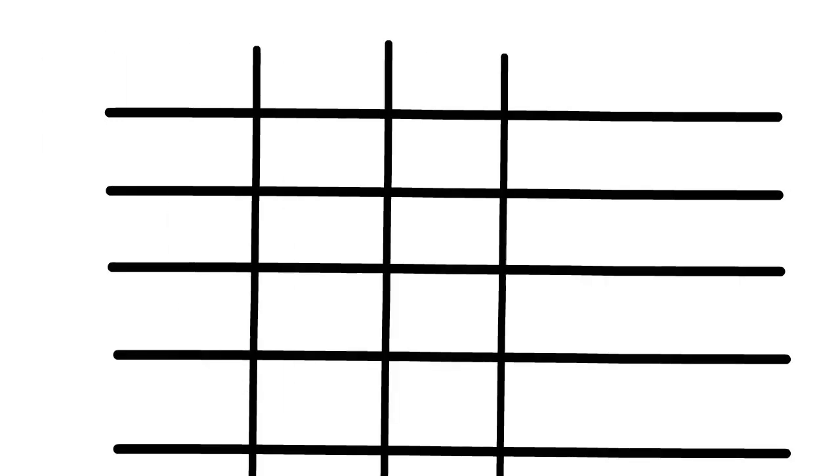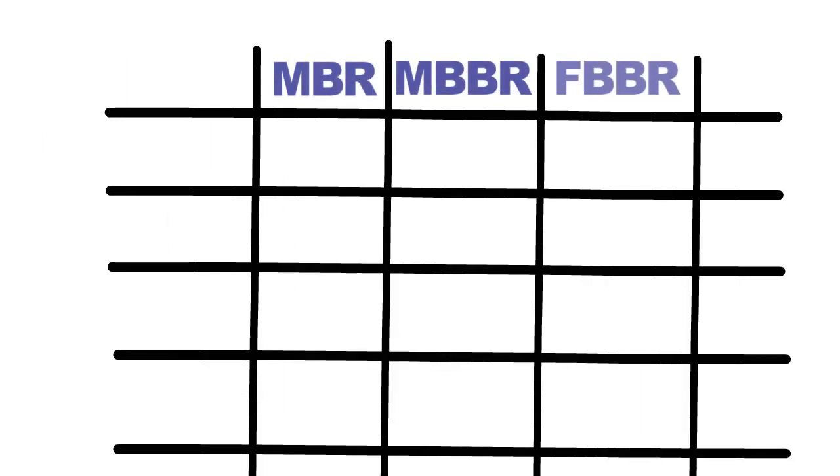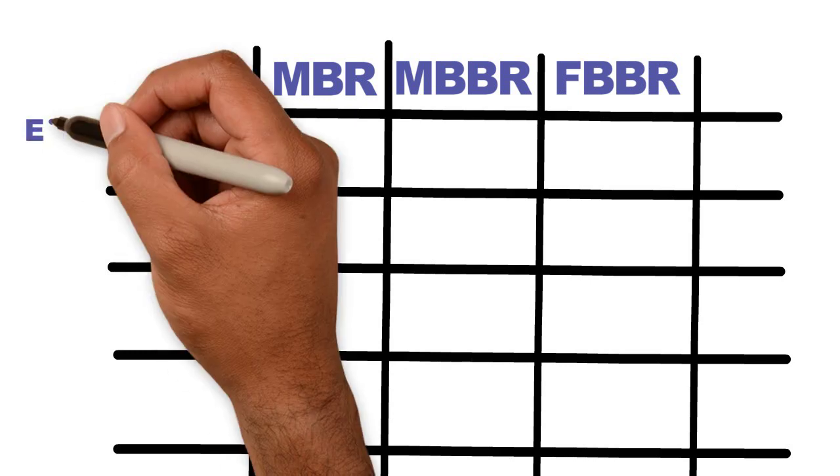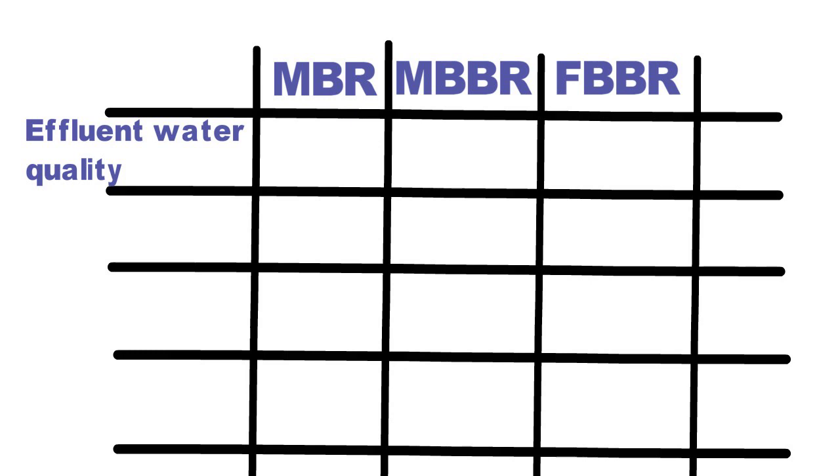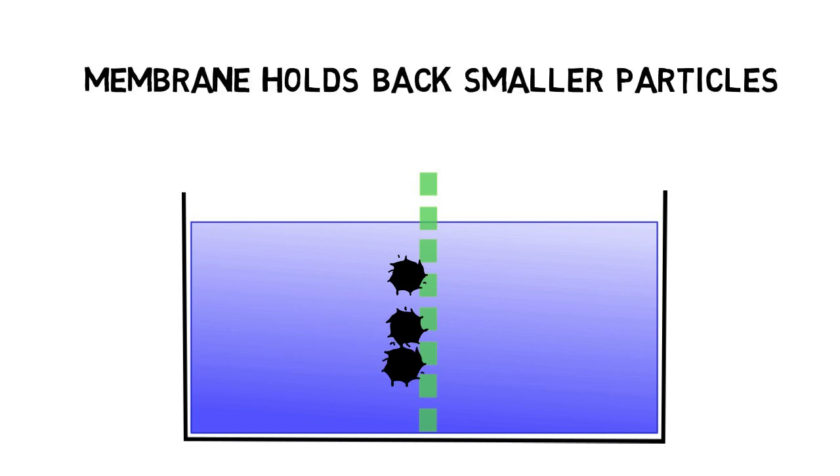The comparison of the three systems showed different advantages and disadvantages for industrial wastewater applications. Effluent water quality: MBRs show in general a slightly better BOD removal than MBBRs or FBBRs. Very fine membranes can even hold back germs so that the water effluent quality is in general better.